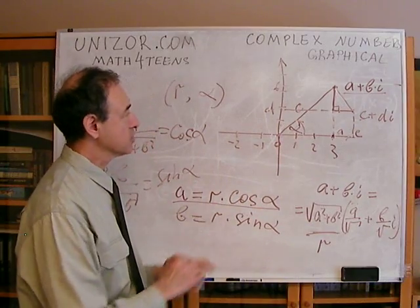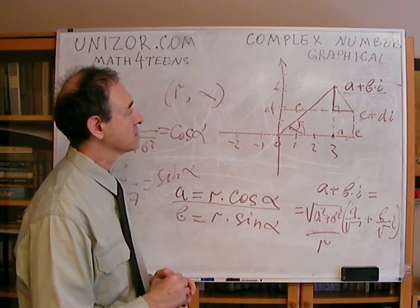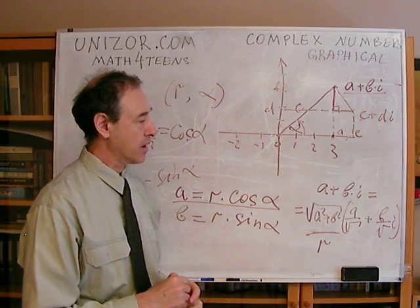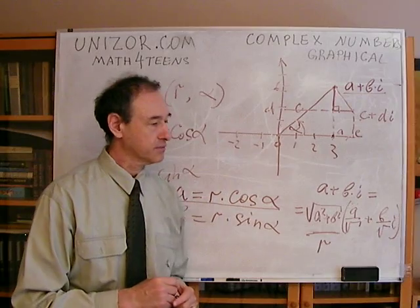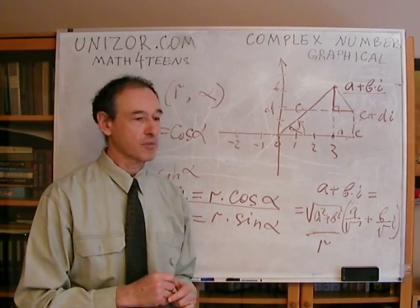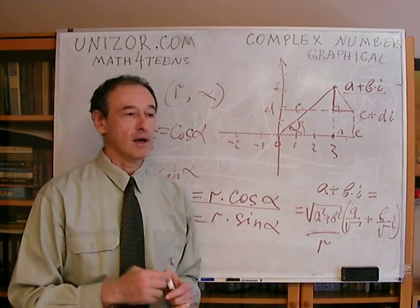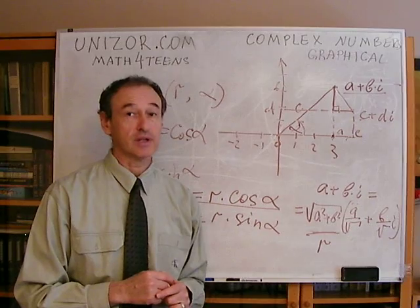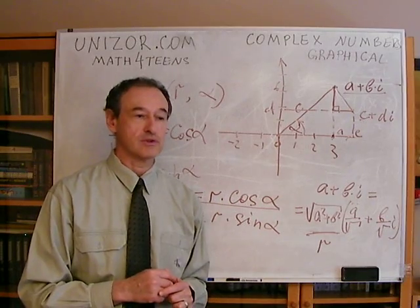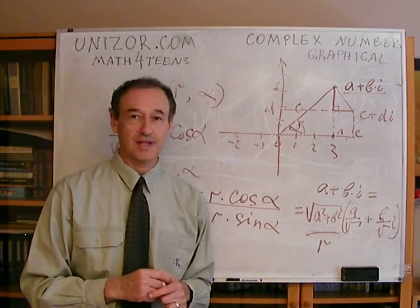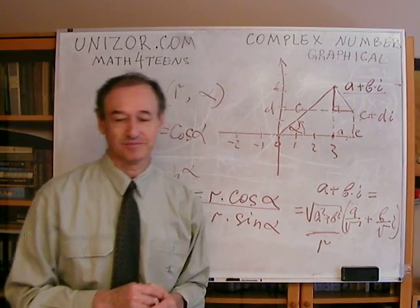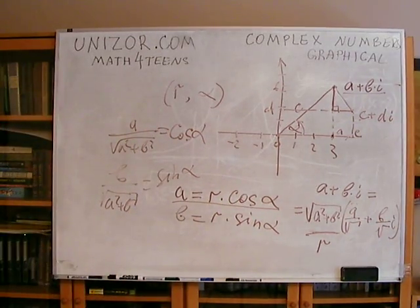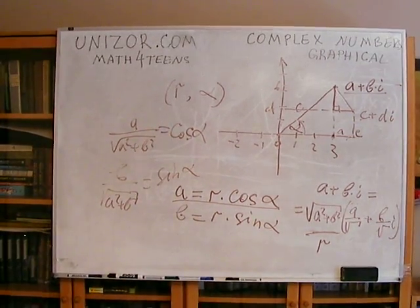If you can prove a theorem in three different ways, you're absolutely sure you've proved it correctly. So these are three different ways to approach the representation of complex numbers: the trigonometric way, the Cartesian coordinate way, and the algebraic way — and all lead to the same thing. That was just a small extra on the graphical representation of complex numbers. There will be a couple of problems which I would definitely recommend solving. Thank you. That's it for today.